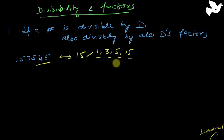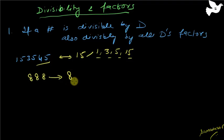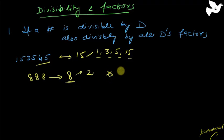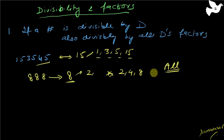It's not only the prime factors that matter. For example, take the number 888 — if this number is divisible by 8, it will be divisible by the prime factors of 8, which is just 2, but also by all the factors of 8: 1, 2, 4, and 8. So all factors — not necessarily just prime — of the divisor D apply.